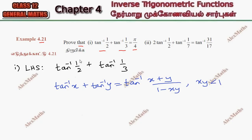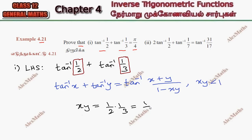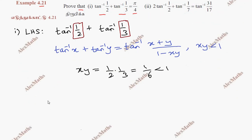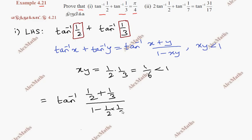Now, x into y equals the product: 1 by 2 into 1 by 3, which is 1 by 6. Since 1 by 6 is less than 1, we can apply the formula. So tan inverse of (x plus y) equals tan inverse of (1 by 2 plus 1 by 3) divided by (1 minus xy), which is 1 minus half into 1 by 3.